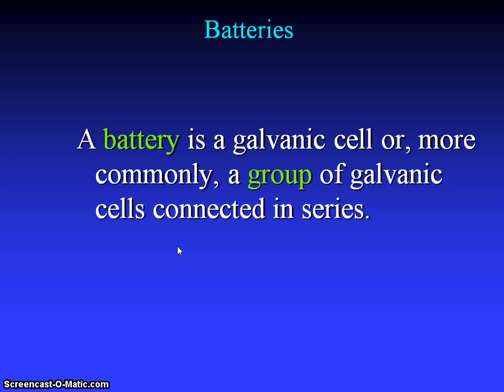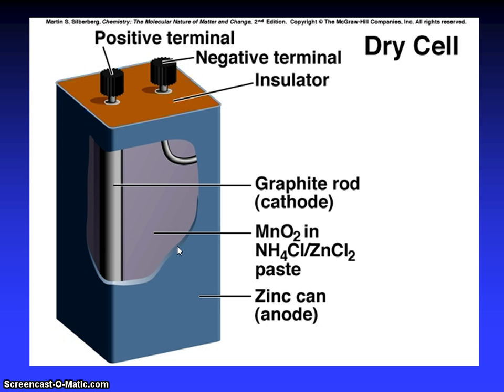What is a battery? A battery is a galvanic cell, or more commonly, a group of galvanic cells connected in series. You can see positive terminal and negative terminal, insulator, dry cell. Graphite rod cathode, MnO2 in ammonium chloride and zinc chloride paste, and zinc anode.